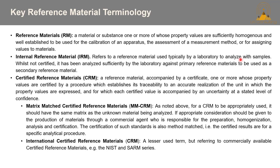There are a few different types of reference material and it's crucial to understand the distinctions between them. First, a general reference material or RM is a material or substance one or more of whose property values are sufficiently homogenous and well-established to be used for calibration of an apparatus, the assessment of a measurement method, or for assigning values to materials. An internal reference material or IRM is used typically by a laboratory to analyze samples. While it's not certified, it has been analyzed sufficiently using primary reference materials to serve as a secondary reference material.